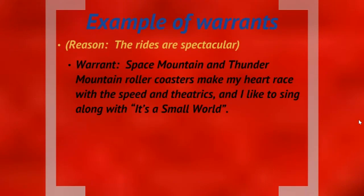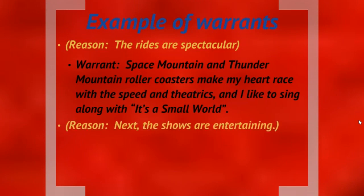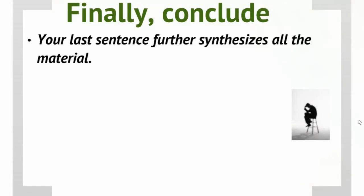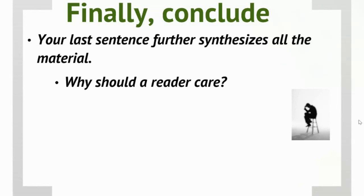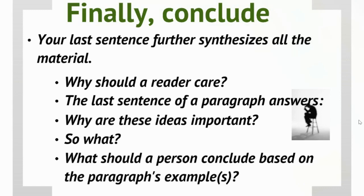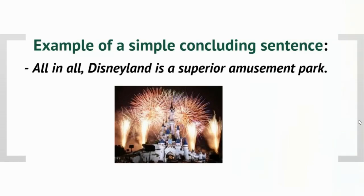Remember the reason: why the rides are spectacular. Now you can be specific: 'Space Mountain and Thunder Mountain roller coasters make my heart race with speed and theatrics, and I like to sing along with It's a Small World.' And: 'The new Snow White show includes great music and fireworks, which are fascinating to watch.' You always want to tie everything together, even in a paragraph. Your last sentence should further synthesize — there should be something about why the reader should care, why these ideas are important.